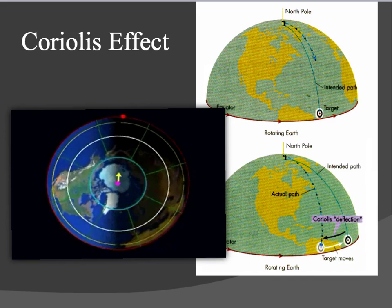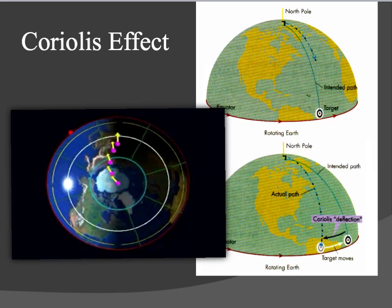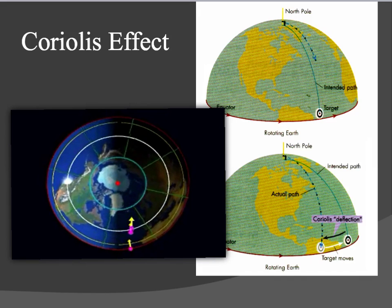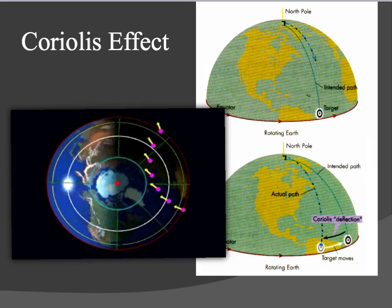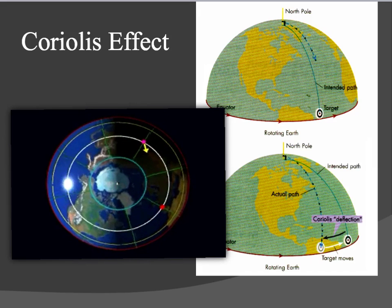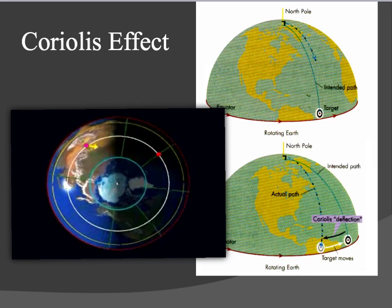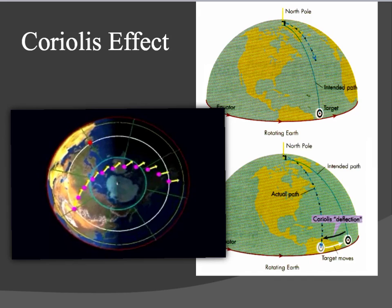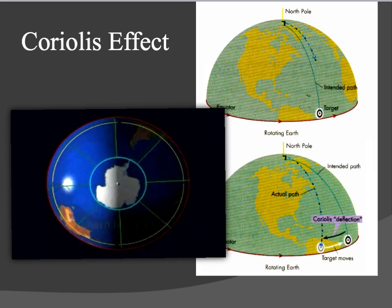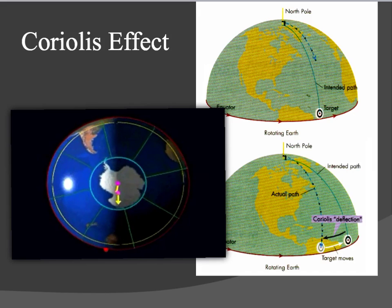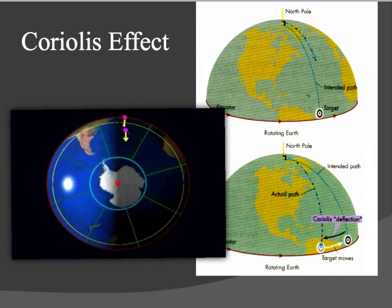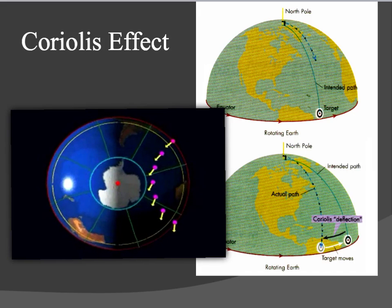Imagine an object launched from the North Pole toward a target on the equator. From the vantage point of the target, the object appears to be deflected. Now the flight is reversed — the object has a velocity component to the right imparted at the point of origin, and it traces a curved path to the right. With an object launched toward a target rotating along the same parallel, the object appears deflected from the initial path, and deflection increases as the object covers more ground.